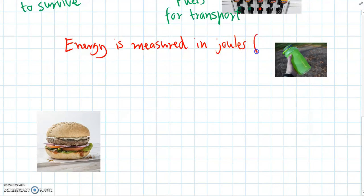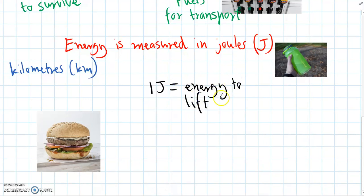And the symbol for joules is a capital J, just like the symbol for kilometres is km. And to try and imagine how much one joule is, because we're not really used to measuring energy in everyday life. One joule, it takes a joule of energy to lift one kilogram ten centimetres off the ground. So one joule equals the energy to lift one kilogram, any object that weighs a kilogram, ten centimetres up or off the ground.